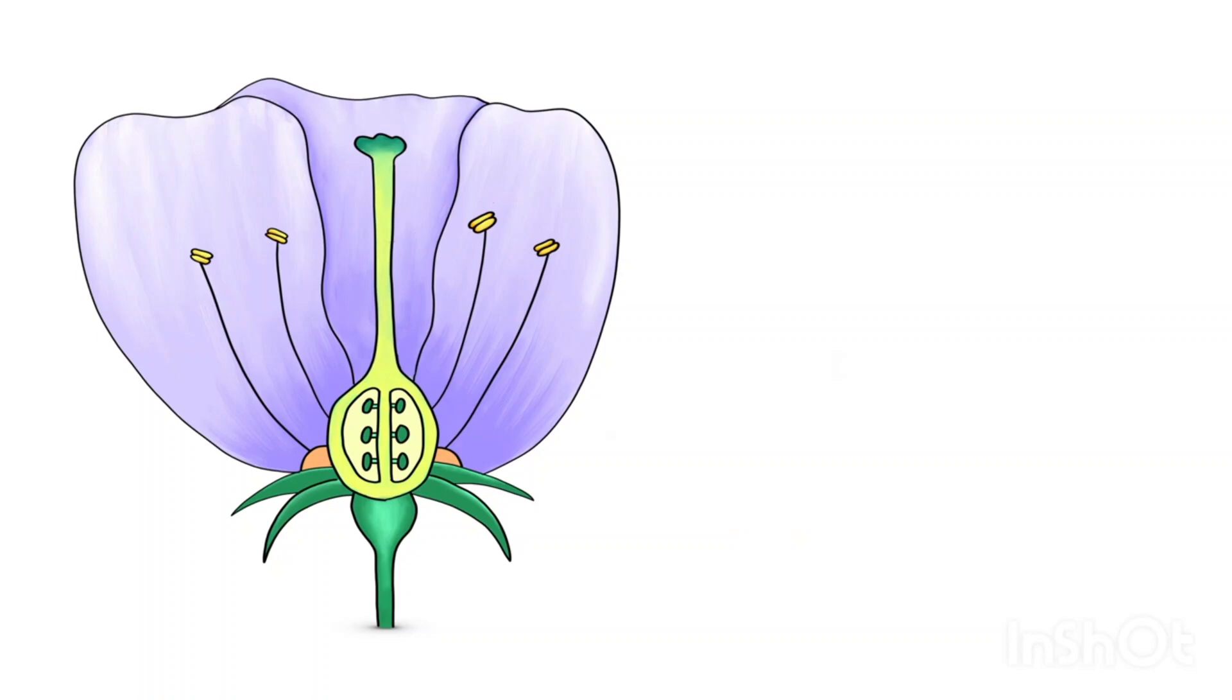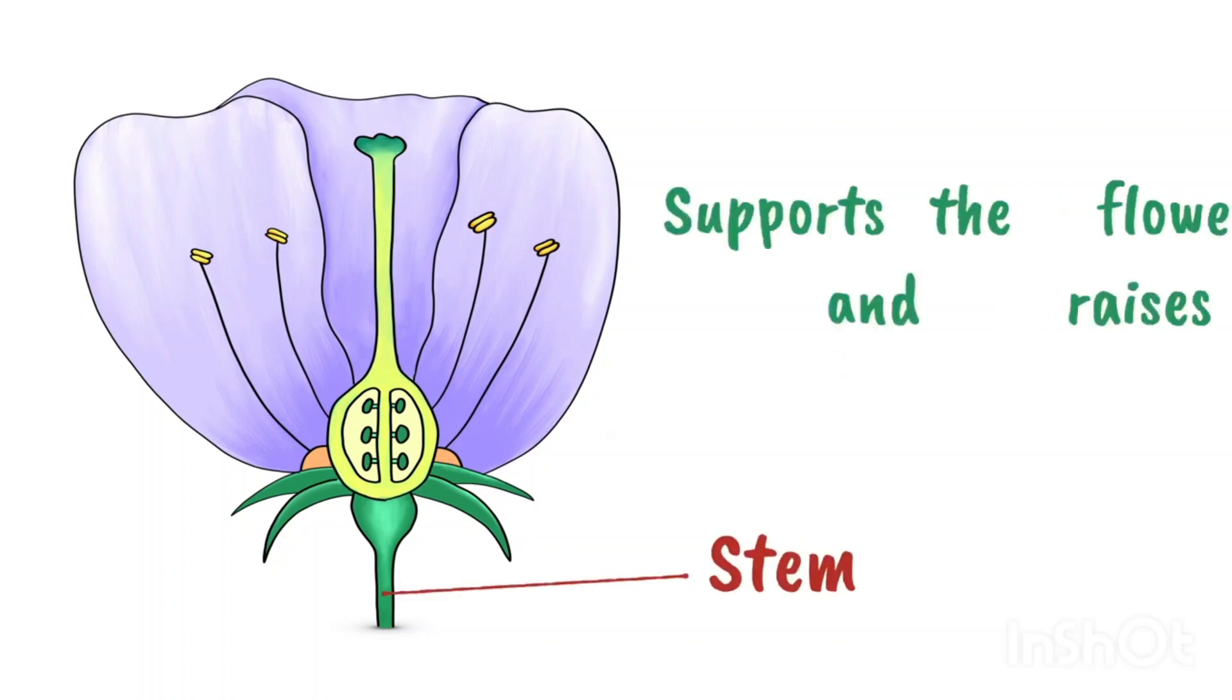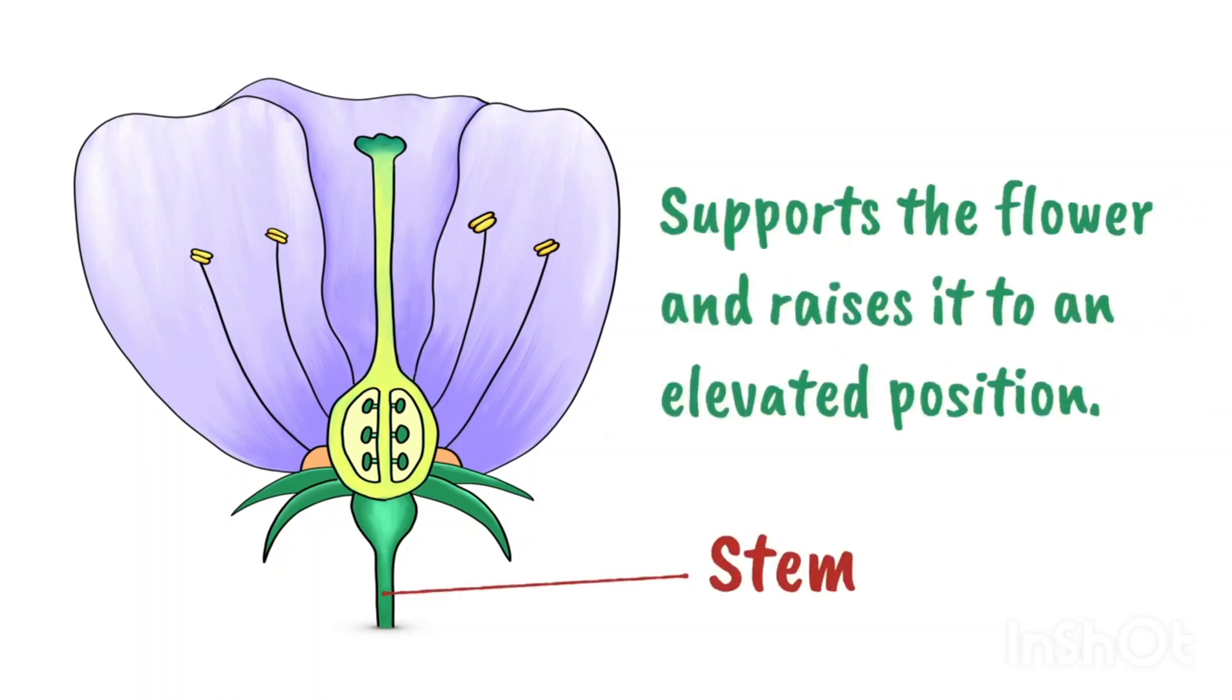There are a few other parts that are relevant. There's the stem which supports the flower and raises it to an elevated position, making the flowers more accessible to insects.